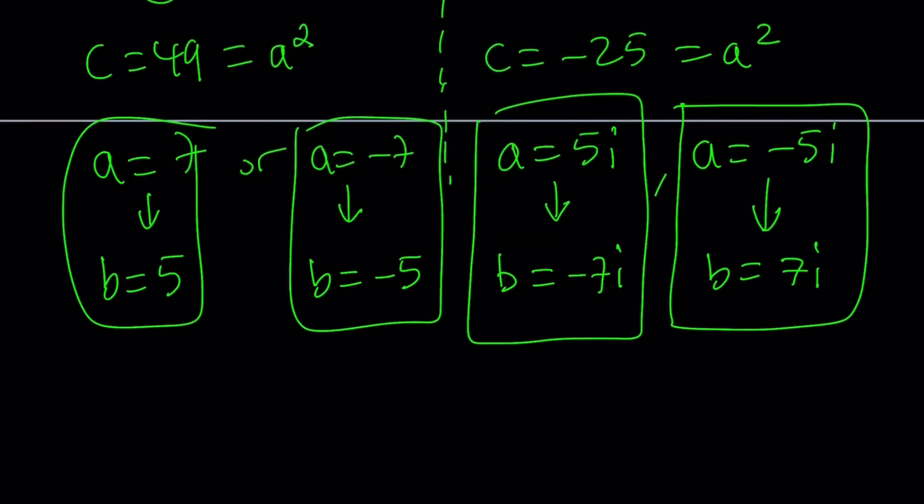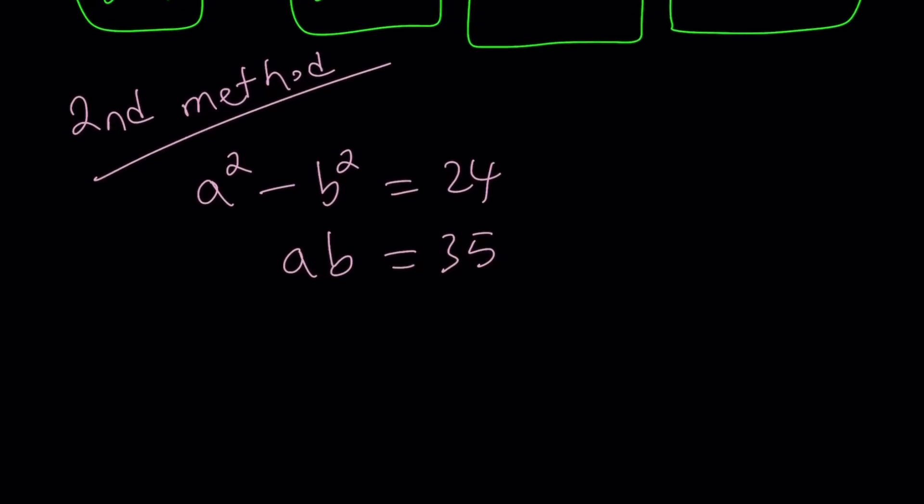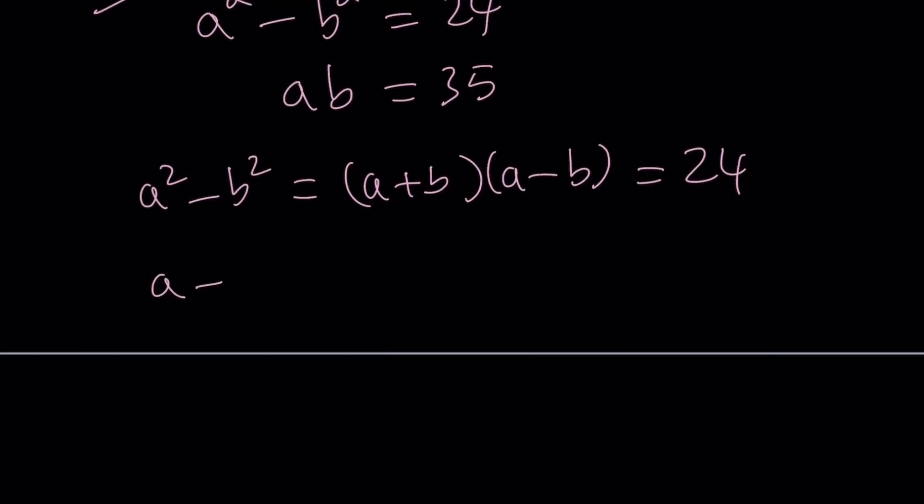For my second method, let me rewrite the original system. I'm going to take advantage of some identities. First of all, a squared minus b squared gives me the idea of using difference of two squares. So a squared minus b squared can be factored into a plus b times a minus b, and this is equal to 24.